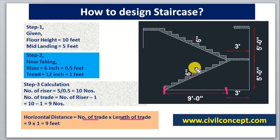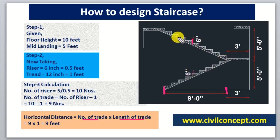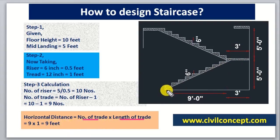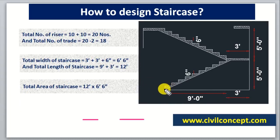In the AutoCAD view, you can see the riser height is 6 inches and the tread width is 1 foot. The landing is 3 feet — we provide the landing ourselves according to available space, and here I have taken 3 feet. So we have now calculated the horizontal distance for one flight.